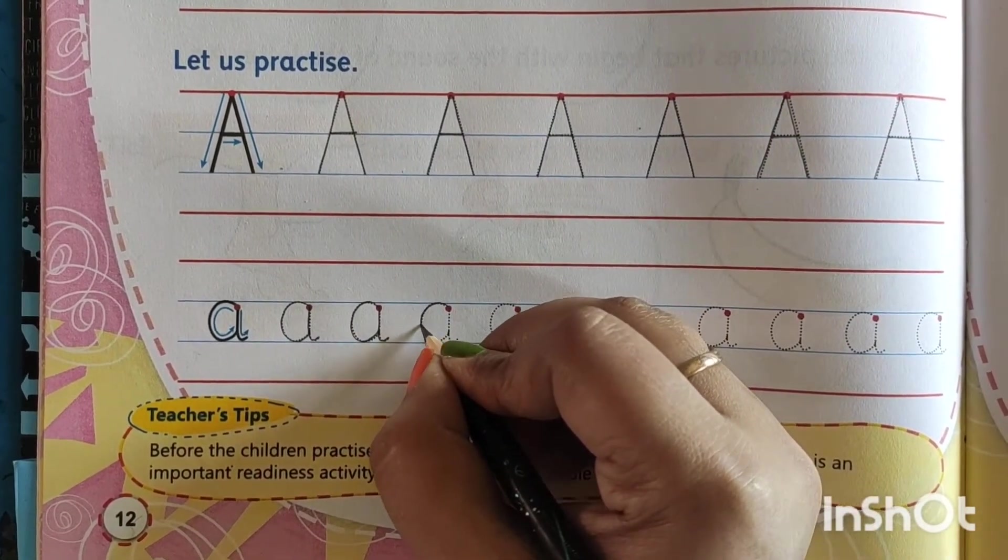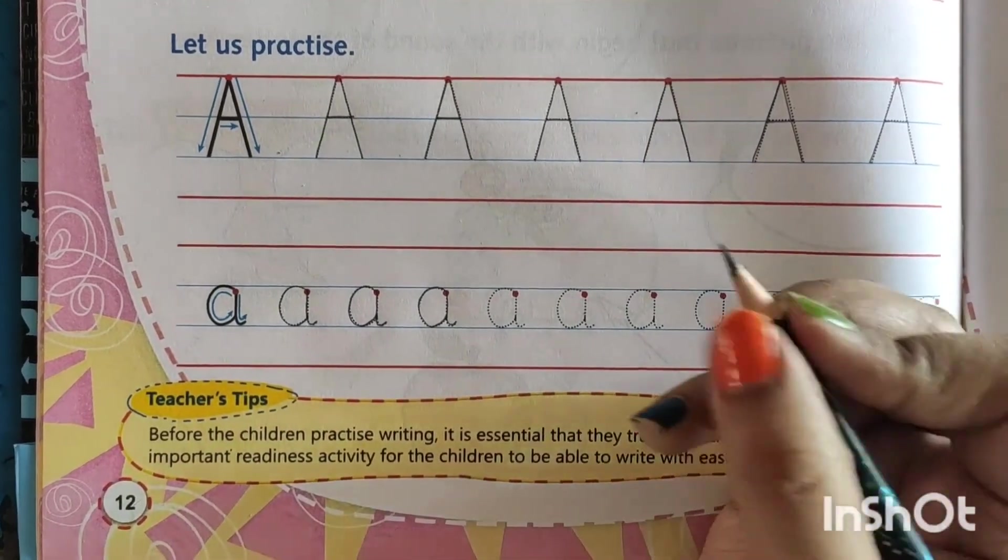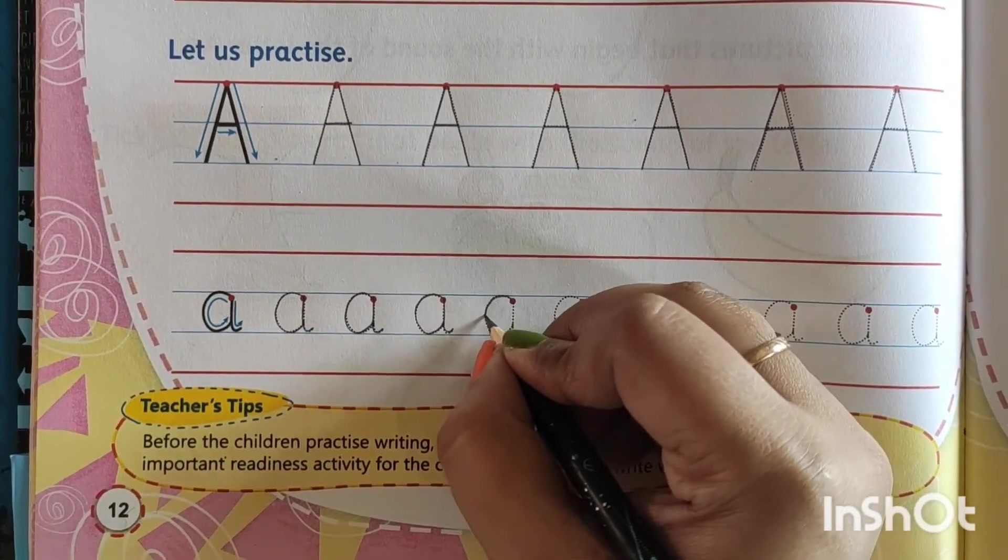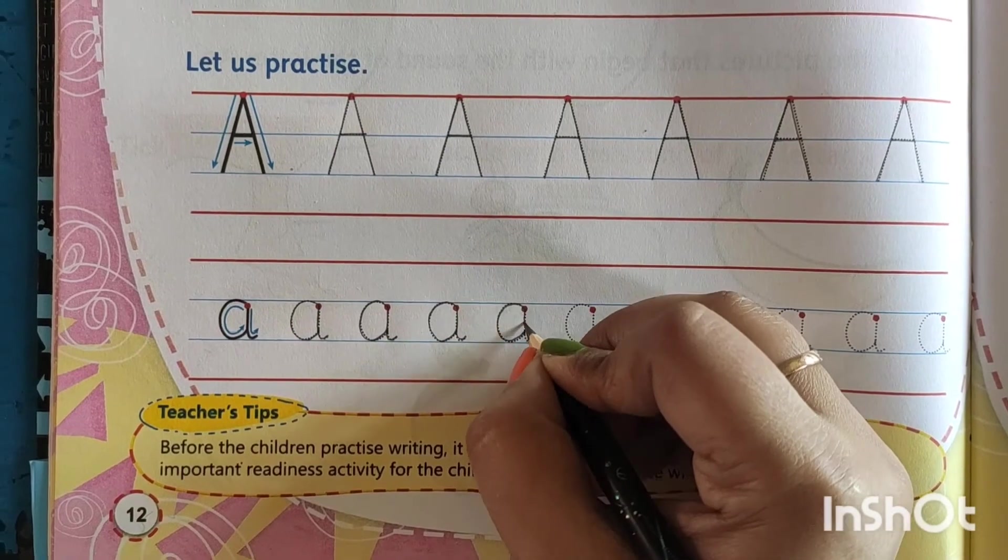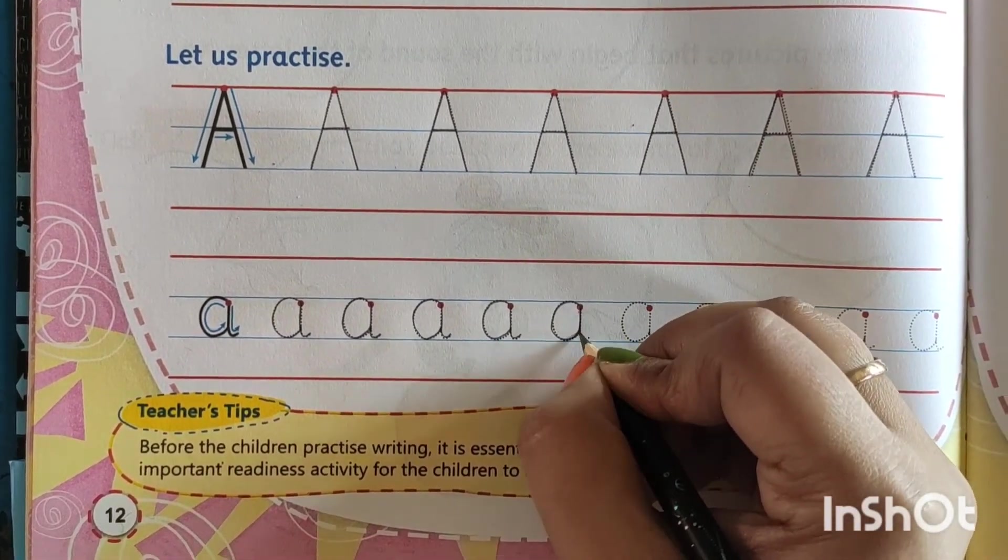Understood? So the steps are one, two. This is the first step, number one step. Then two. One, two. One, two.